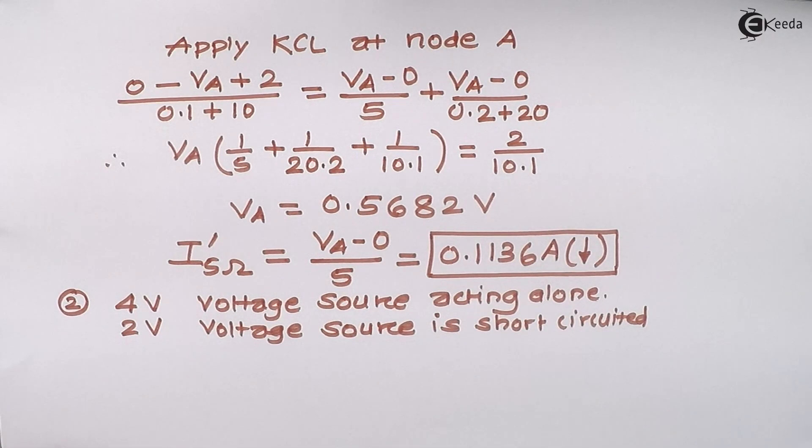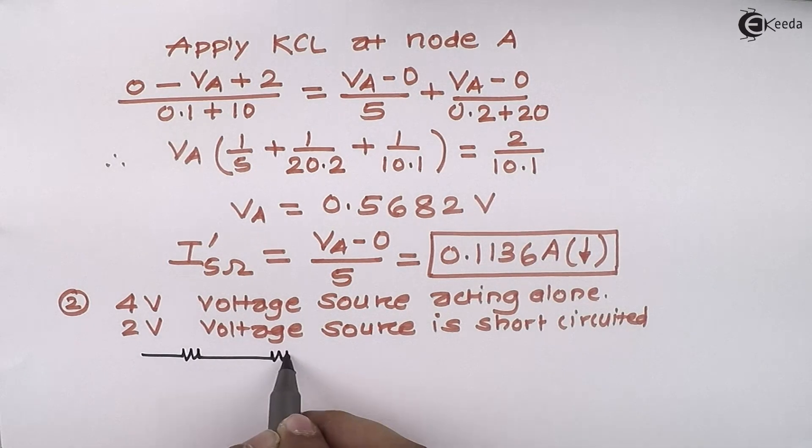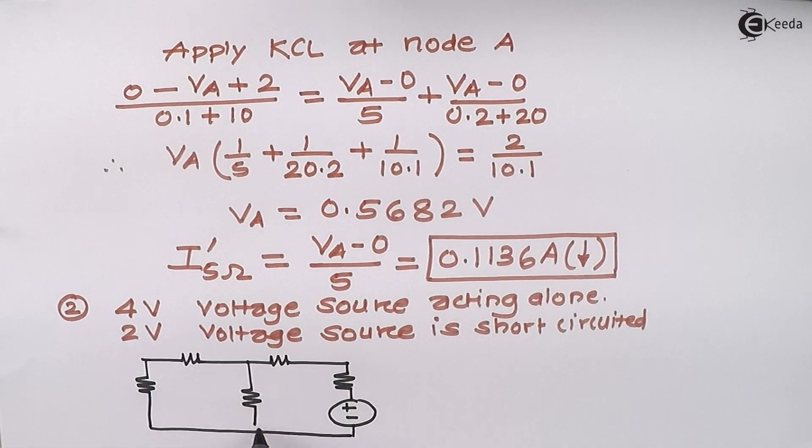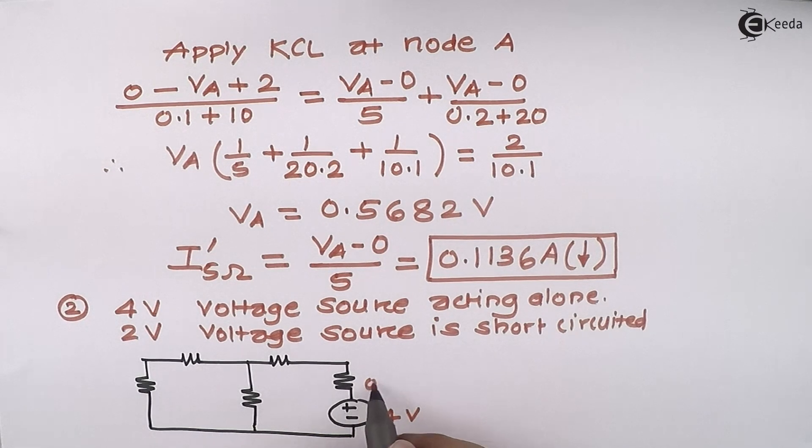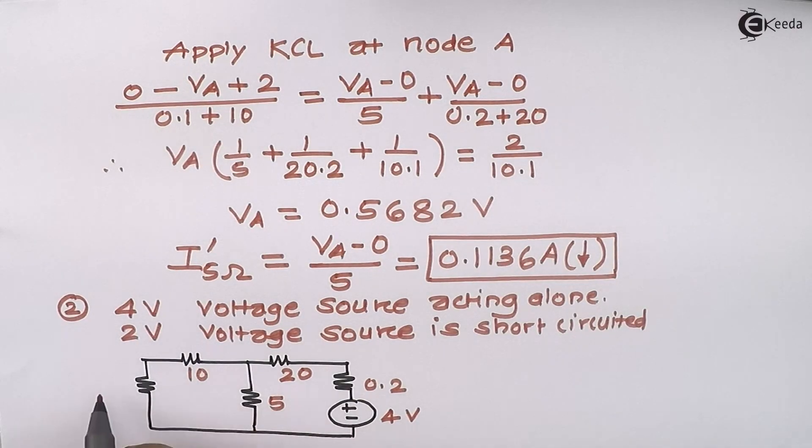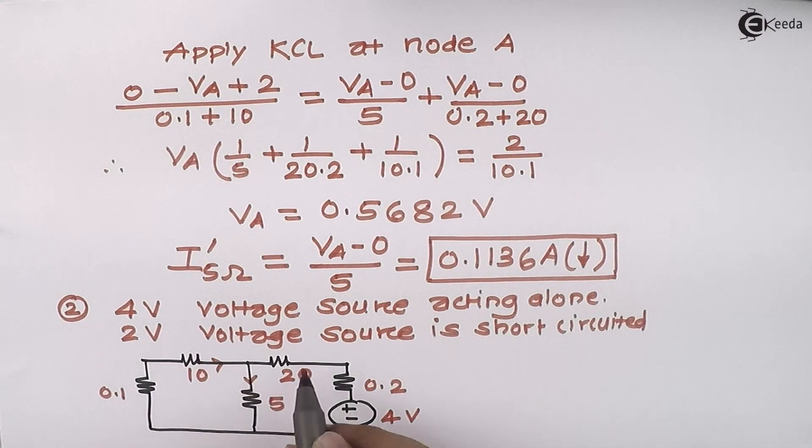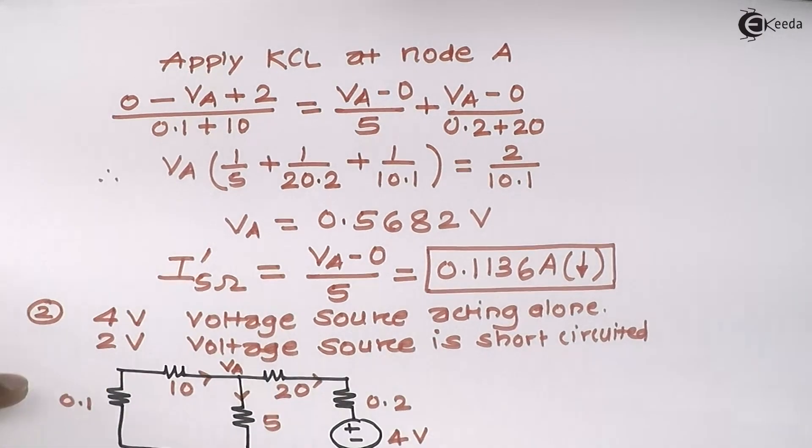Since I have done a modification to the original circuit, I need to redraw it. This time I have shorted the 2 volt voltage source, so I will get this circuit: 4 volt, 0.2 ohm, 20, 5, 10, and 0.1 ohm. I will advise you to go for nodal analysis for analyzing this circuit because most of the things are already done for step one. You can copy paste it, that means you can copy all the current directions and mark this as node A having potential VA. Let's apply KCL at A.